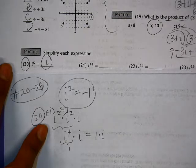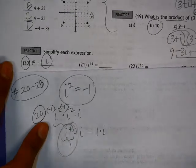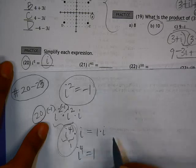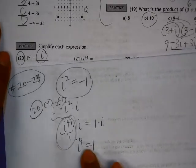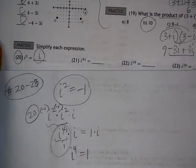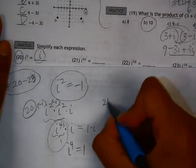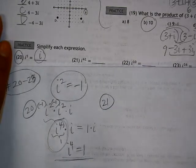So let's use this right here. The fact that i to the fourth is equal to 1 is really helpful, because 1 is a really nice number to deal with. So for example, let's look at 21 and see how that can help us, the fact that i to the fourth is equal to 1.